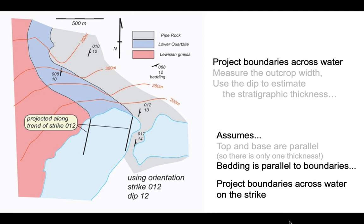And we'll use this trend to project the boundaries across the water parallel to this direction of strike. So that's what we've done on the map. Those two thick lines take where the boundary at the base and the top of the lower quartzite come down to the water's edge and then across the water surface we will project their continuation along this trend of strike of 012.